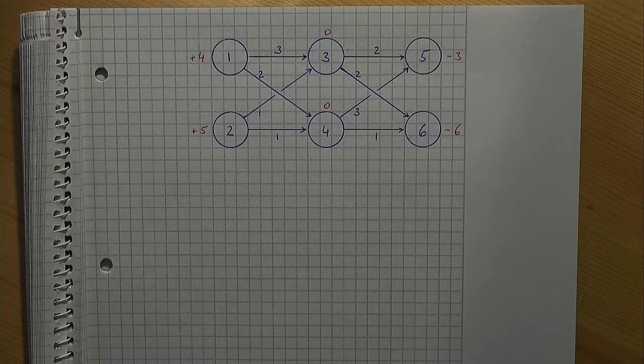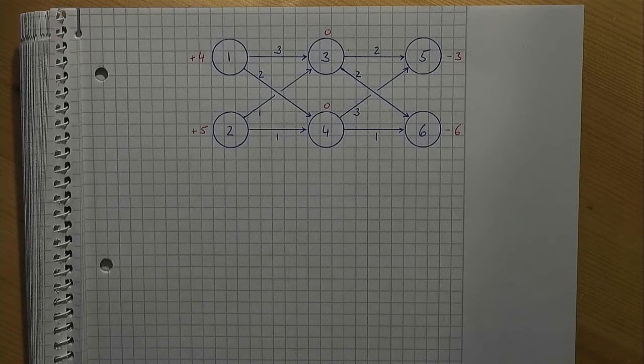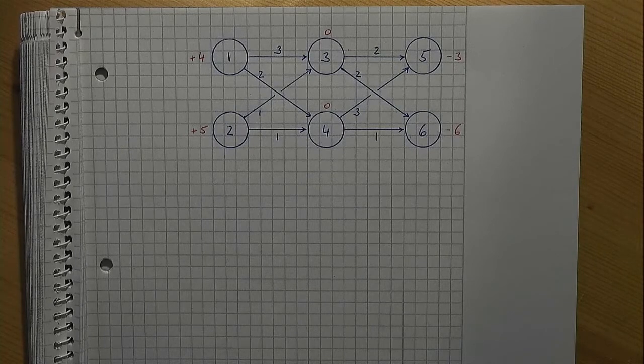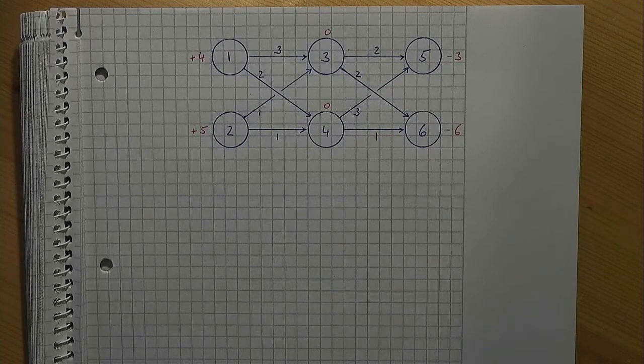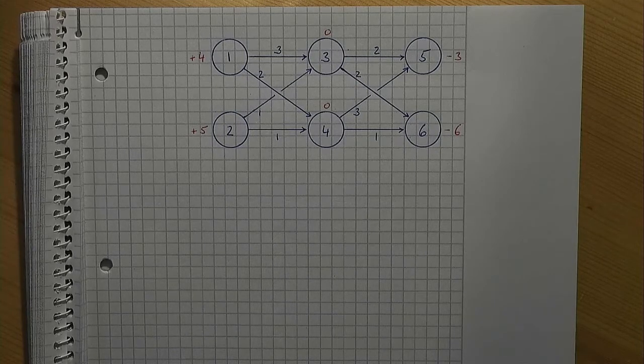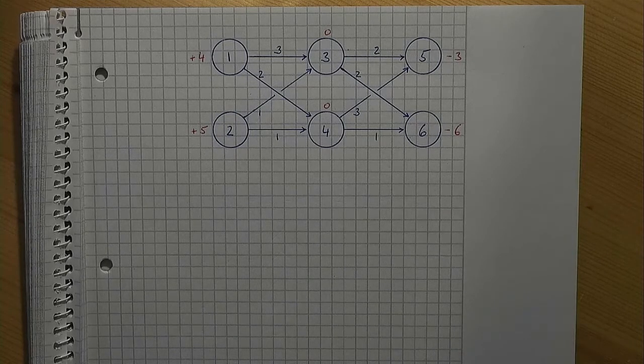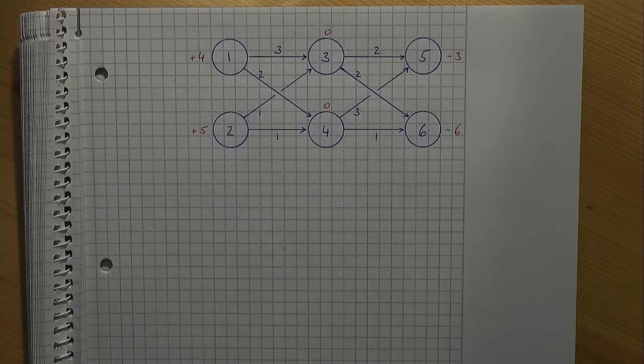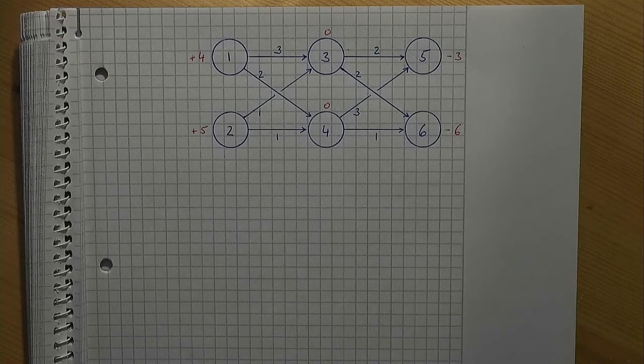In a network flow problem as considered here we have three types of nodes. First there are so-called sources. A source can be considered as an entry point where the fluid that is to be transported enters the transportation network. The amount that is fed into the network is indicated by a positive number in our example. As you can see nodes 1 and 2 are sources.